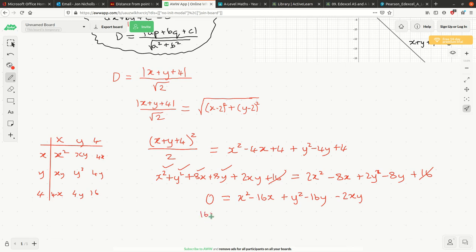If you've got, let's put the 16X and the 16Y on this side. And then we're going to have X squared plus Y squared minus 2XY. Well, that's X minus Y all squared, isn't it? And therefore we've got X plus Y equals X minus Y squared over 16.